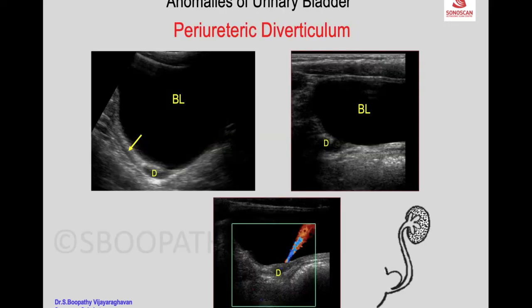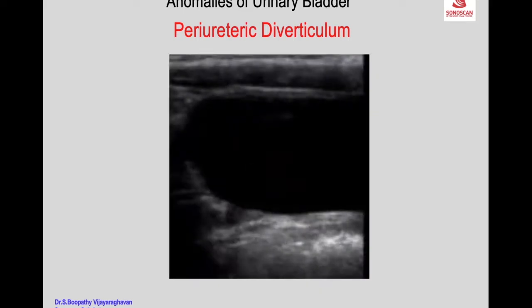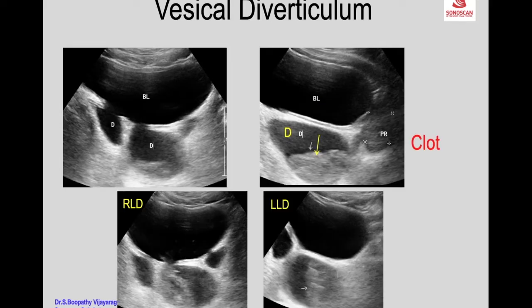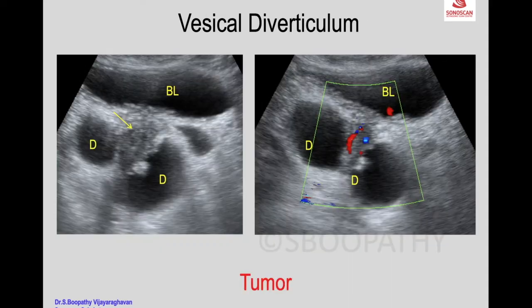Multiple diverticula confirming that it is a periureteric type. That is due to a clot, with the patient presenting with hematuria. You can confirm that it is a clot by shifting the position of the patient — you see the clot shifts. You will see the flow within the mass.